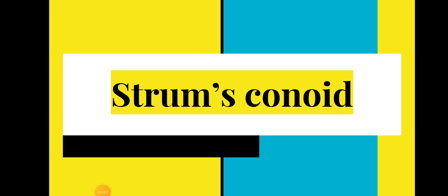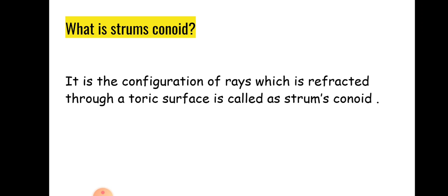Hello friends, welcome to my new video. Today I'm going to discuss Sturm's Conoid. Many of us get confused about it and think it's a very tough concept, but if we learn it through real examples we will understand it easily. Sturm's Conoid is the configuration of rays which are refracted through a toric surface.